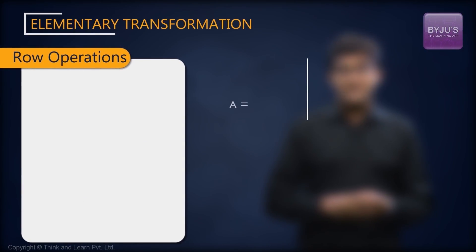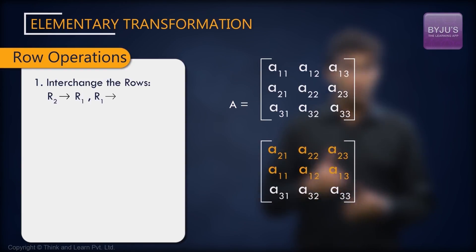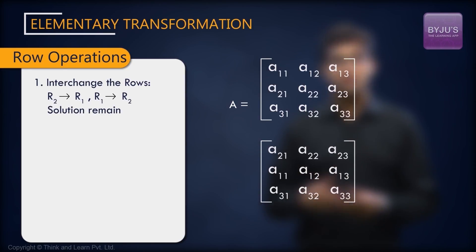So let's look at the various row operations. Number one is interchanging of rows. That is, if you interchange the rows of the original matrix and get a new matrix, there won't be any change in the solution.